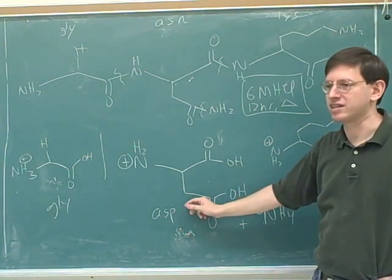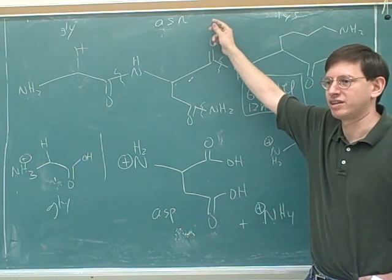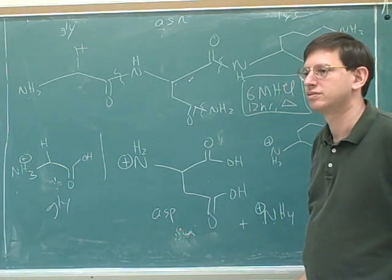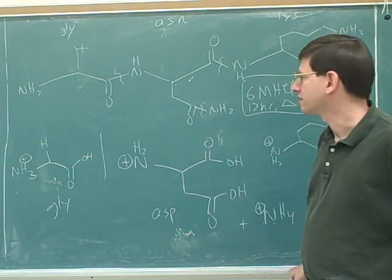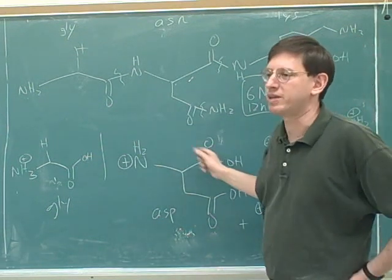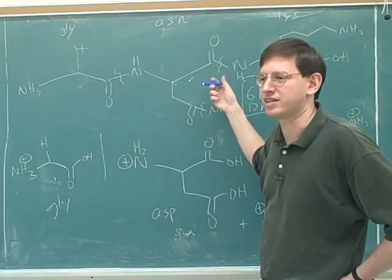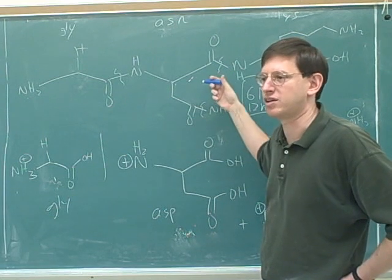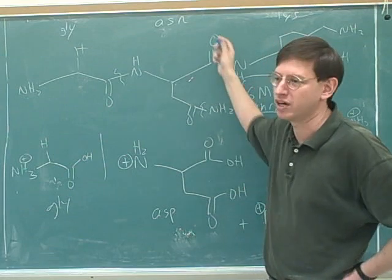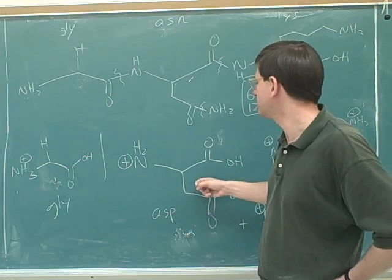When the computer says aspartic acid, we need to recognize that it might have come from aspartic acid or it might have come from asparagine — we can't tell yet. We also have to keep in mind the risk of tryptophan and cysteine having been destroyed. One way to detect that is to count: if you have fewer amino acids after total acid hydrolysis than expected, you probably had tryptophan or cysteine in there.